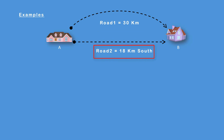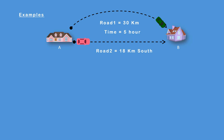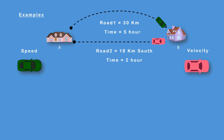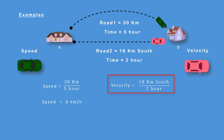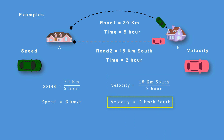Let a car move by road 1 from city A to city B in 5 hours, and let another car move by road 2 in 2 hours. The first car has speed and the second car has velocity. When we divide 30 kilometers by 5 hours, we get 6 kilometers per hour — that is speed. When we divide 18 kilometers south by 2 hours, we get 9 kilometers per hour towards south — that is velocity, because it is speed plus direction.